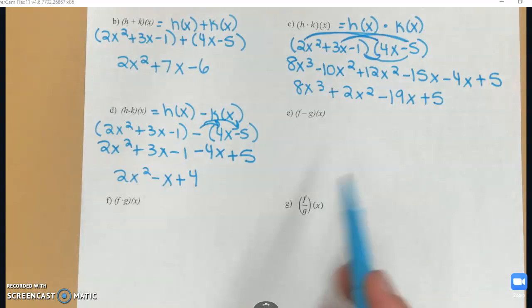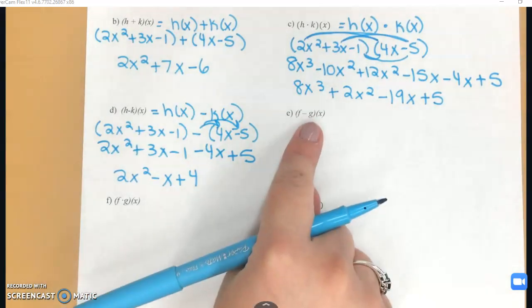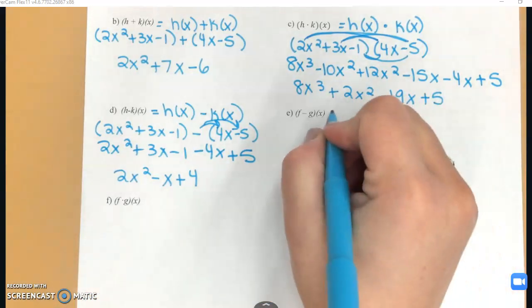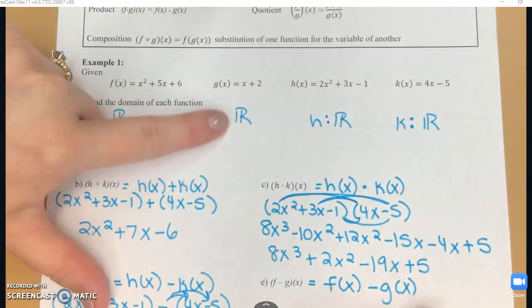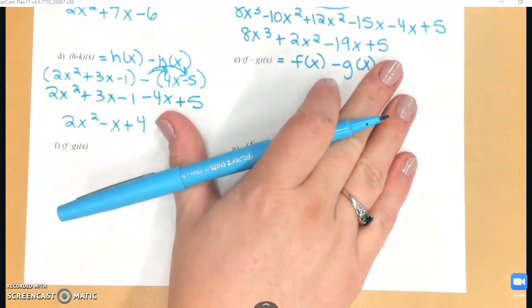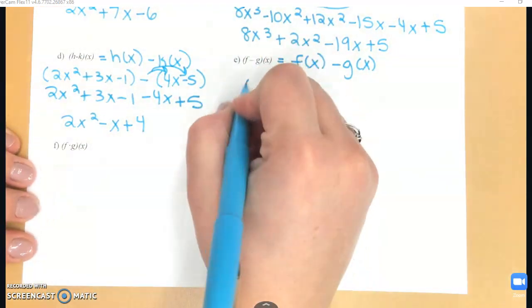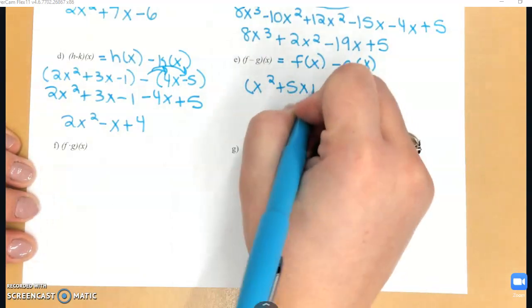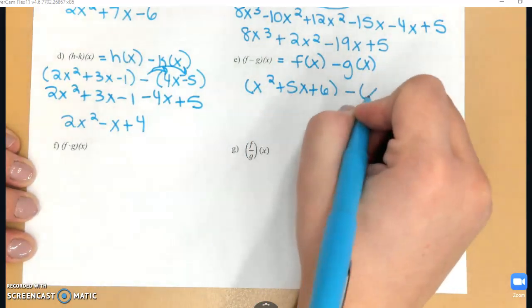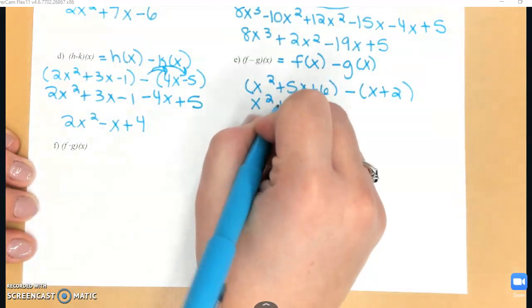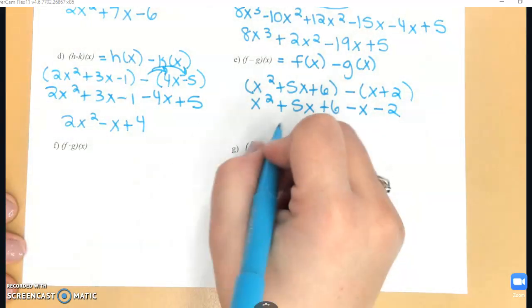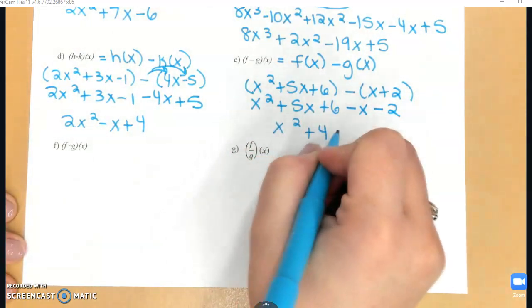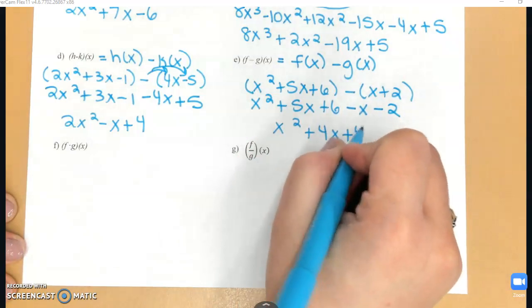Part E moves away from h and k — we're looking at f and g now. This is subtraction, so I'm going to take f of x and subtract g of x. I'll be sure to put the second function in parentheses to distribute that minus sign, giving minus x minus 2. Then I combine like terms for my final answer.